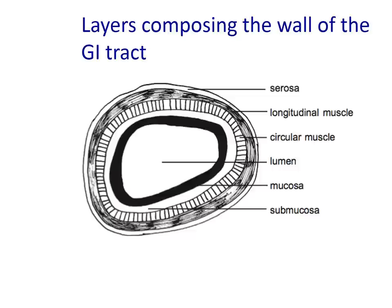Underneath the epithelium, but still part of the mucosa, is a layer of connective tissue containing small blood vessels, vital for taking oxygen and nutrients to the tissues and removing waste products such as carbon dioxide and nitrogen-containing waste products of metabolism.